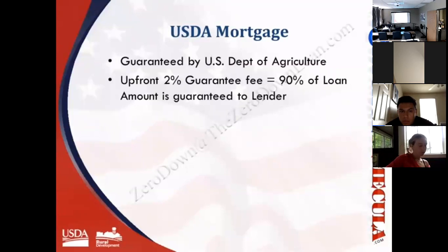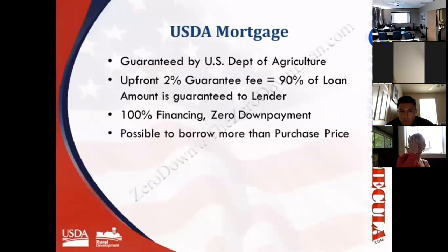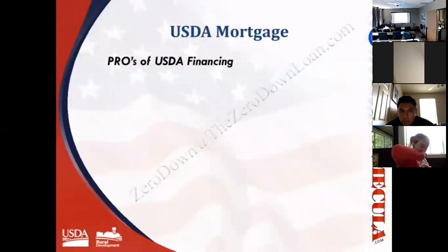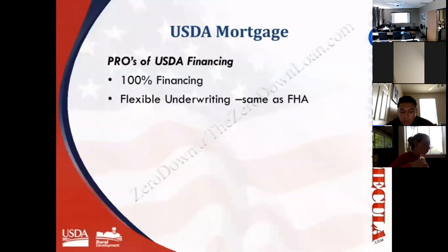USDA loans are guaranteed by the U.S. Department of Agriculture, which gives lenders assurance that they will guarantee up to 90% of the loan amount in the event of default. In response to this guarantee, lenders will lend 100% of the purchase price — and sometimes even more than 100% if the appraisal supports a higher value than the contract price. USDA loan pros include 100% financing with no money down, flexible underwriting guidelines similar to FHA, and there is no loan amount limit.